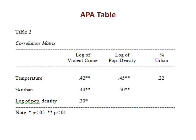Here the results are summarized in an APA table. Note that only half the table is reported. We don't need the other half of the matrix because of symmetry, and we don't need the diagonal because this information is redundant. Notice that the asterisk system is used here to report statistical significance. The footnote contains the interpretation of the asterisks, and this footnote should be included even though the convention is well known. Only one variable, the correlation between temperature and percent urban, is not statistically significant.